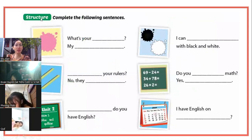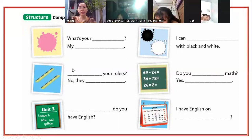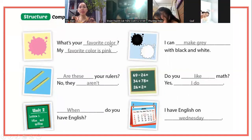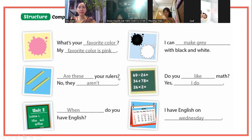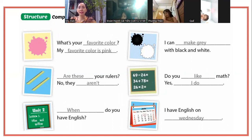Chúng ta qua phần tiếp theo: cấu trúc câu. Complete the following sentences - hoàn thành các câu sau. What's your favorite color? Màu sắc yêu thích nhất của bạn là gì? Các bạn trả lời: My favorite color is pink. Tương tự: I can make gray with black and white - bằng màu đen và màu trắng. Ở đây có 2 cây thước kẻ: Are these your rulers? No, they aren't. Không phải. Ở đây người ta cho hình môn toán, hỏi bạn có thích môn toán không: Do you like math? Yes, I do.